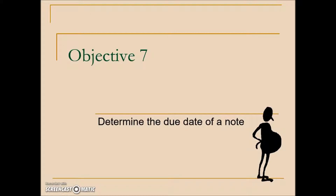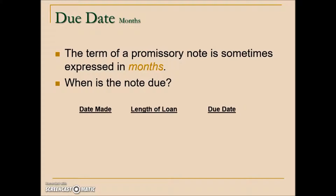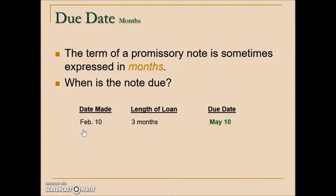The last thing we'll look at is determining the due date of a note. The term of a promissory note is sometimes expressed in months. For example, if a note was made on February 10th and the length of the loan was three months, we simply add three months to February: February, March, April, May — putting us at May 10th.